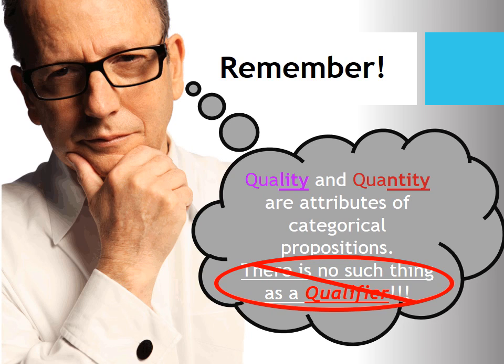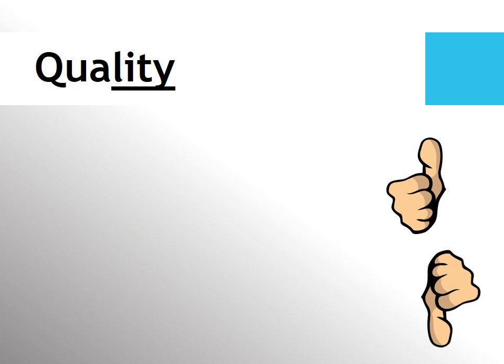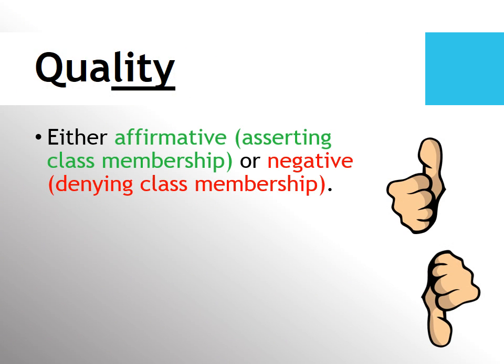Let's talk about quality and quantity a little bit. Now the quality of a sentence tells you whether it's affirmative, which is to assert class membership, or negative, which denies class membership. So all S are P and some S are P are your affirmative sentences, because they are basically telling you that some S are included in the P category.